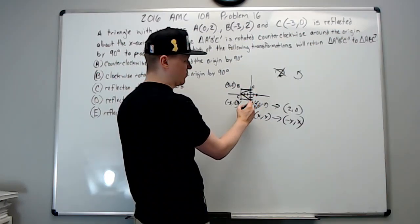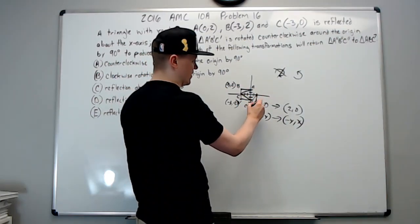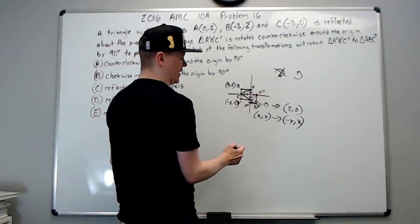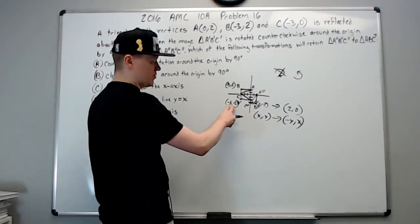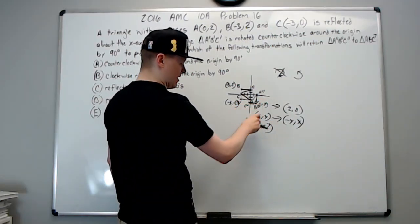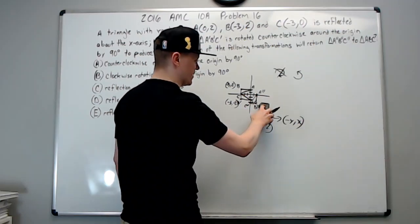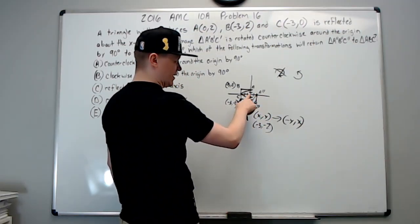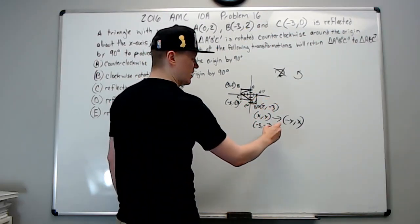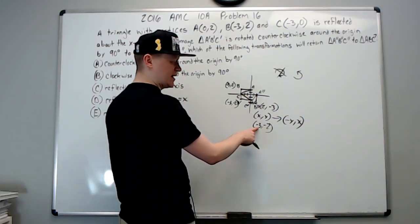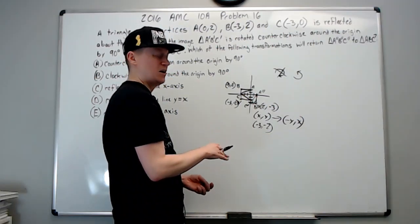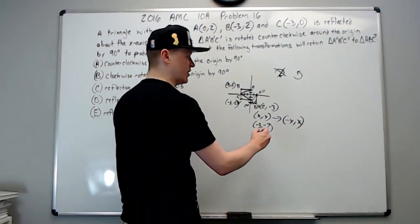Let's confirm that. So (-3,-2) became what? B double prime is now located at 2 on the x-axis and -3 on the y-axis. So it does look exactly like what's happening here. The -3 doesn't change - we didn't really know that with the zero because it could have been negative for both of them and switching, but we can tell now for sure.